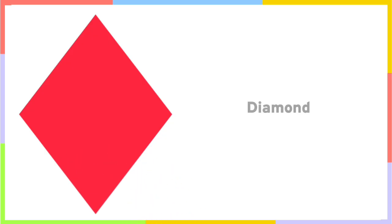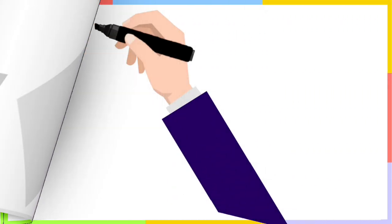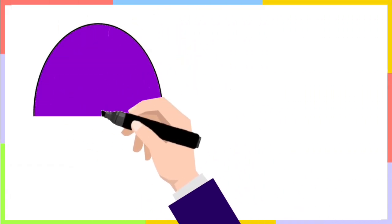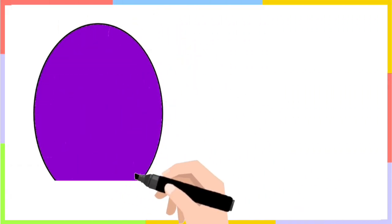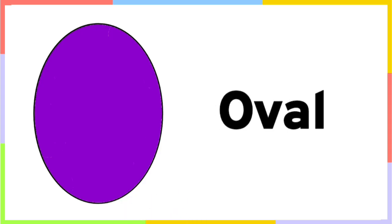Diamond — this shape is called diamond. Oval — this shape is oval.